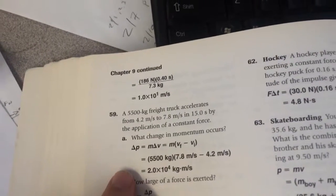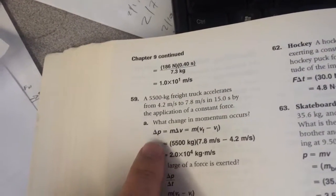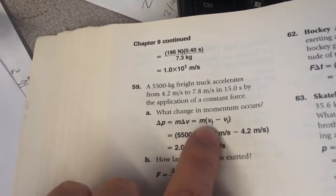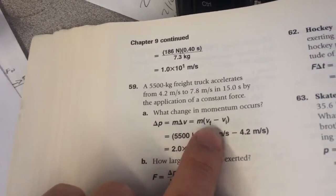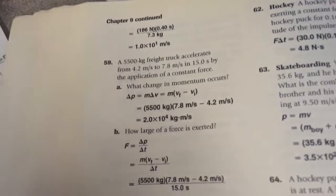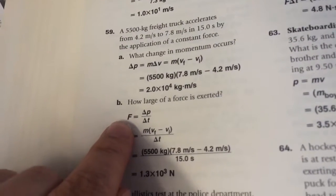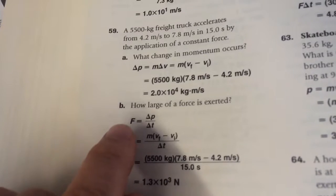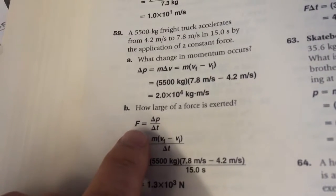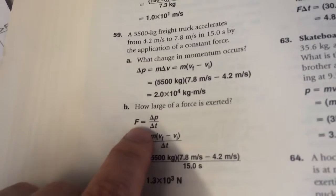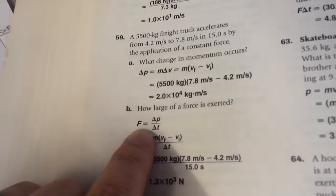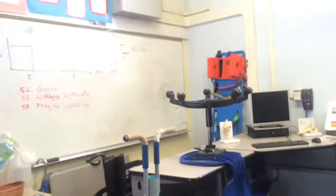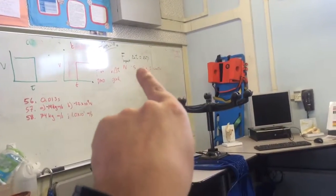For 59, again, we're trying to figure out the change in momentum, so this is change in momentum, mass times the quantity of the final velocity minus the initial velocity. To figure out the force, we use that impulse-momentum relationship. Impulse and the change in momentum, we use that equation, this is it already rearranged. This is the same equation as that one, right there.